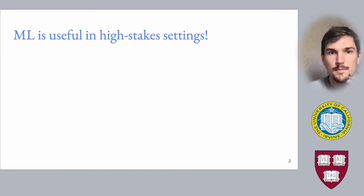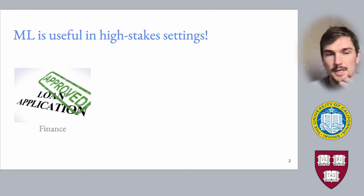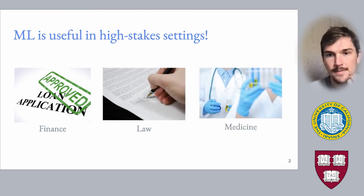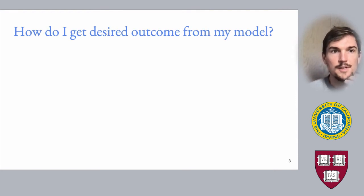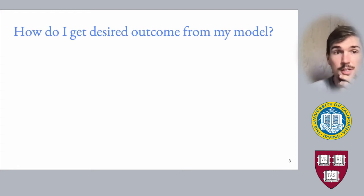Machine learning is pretty useful in high-stakes settings. This can range from applications such as finance — for instance, loan prediction — to situations like law, to even medicine. In these situations, we're often interested in questions beyond what was the initial prediction on a given instance. In particular, we're often interested in asking the question: how can I get a desired outcome from my model?